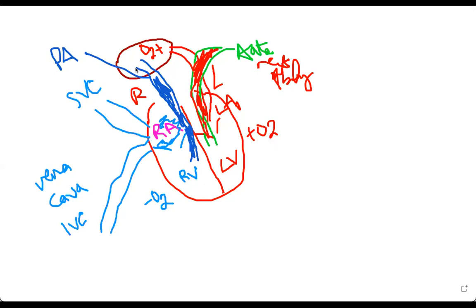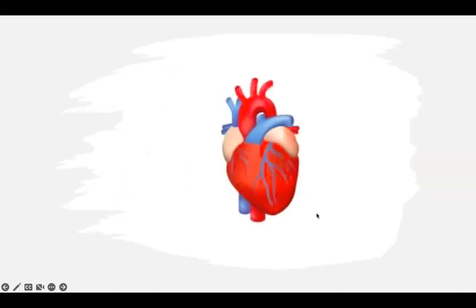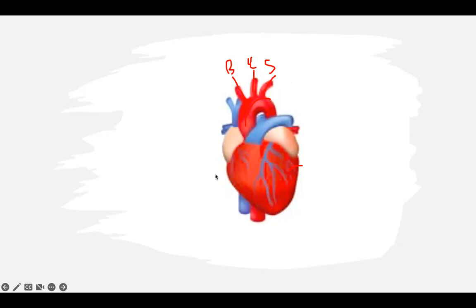Anatomically, when you look at the picture, this is exactly what I've drawn. This is the right side of the heart, this is the left side of the heart, and this is the aorta with branches going to different portions of the body. The vessels include the brachiocephalic, common carotid, subclavian, and branches into the rest of the body. The blue vessels are the ones that go to the lungs.